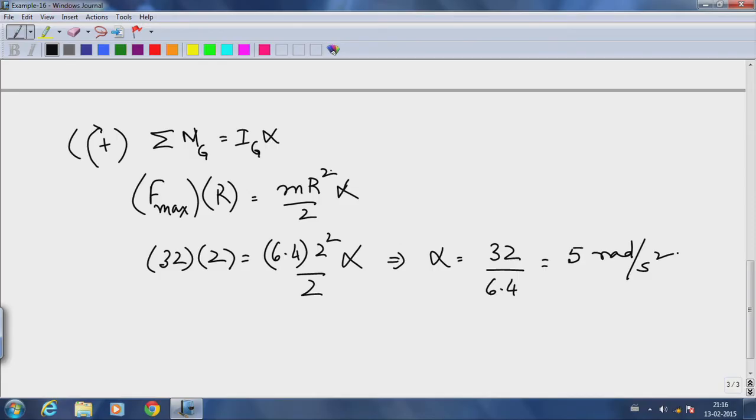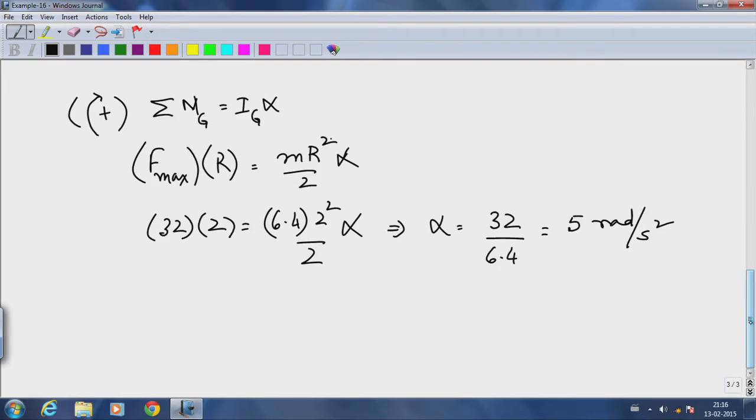So that means alpha is 5 radians per second squared. Now let us understand what is happening here at this point A. Let us understand the kinematics of this cylinder.